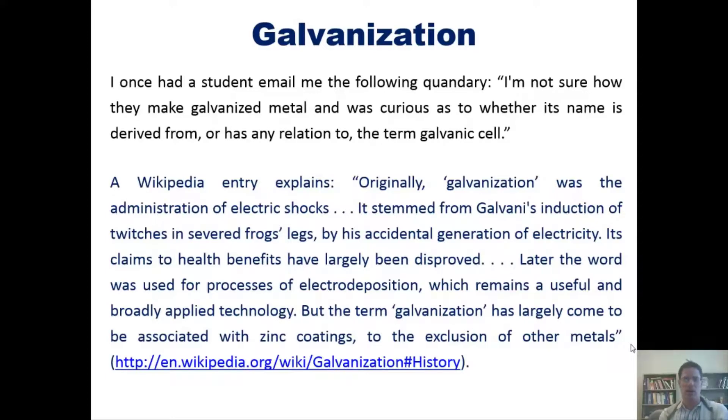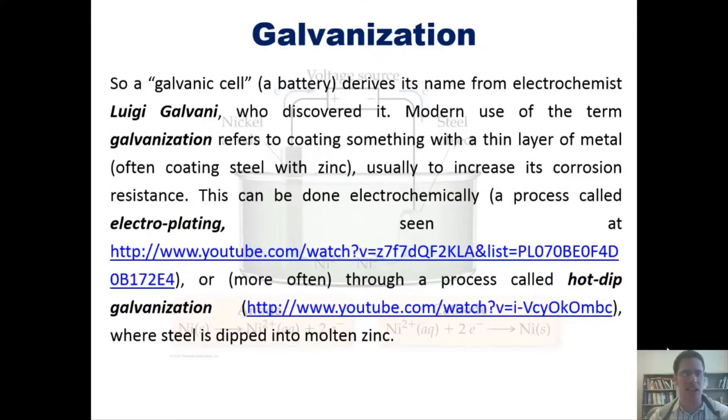Hence a galvanic cell or a battery derives its name from electrochemist Luigi Galvani who discovered it. Modern use of the term galvanization refers then to coating something with a thin layer of metal, often coating steel with zinc, usually to increase its corrosion resistance. This can be done electrochemically, a process called electroplating which is shown here at this YouTube video, or more often through a process called hot-dip galvanization where steel is dipped into molten zinc, shown at this YouTube video.